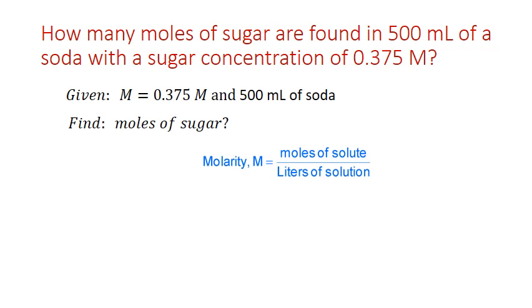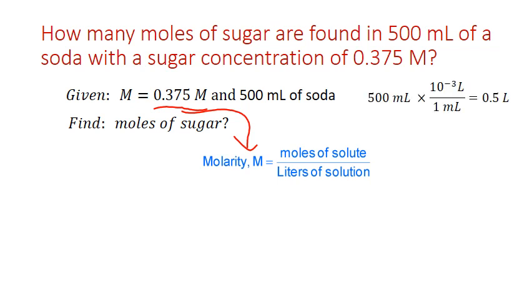For our molarity calculation, we use the formula and substitute the molarity directly. The volume of solution is in milliliters, so we need to convert to liters first. Using the conversion 1 mL = 0.001 L, the milliliter units cancel out and 500 times 10⁻³ gives us 0.5 liters, which we substitute in for the denominator.